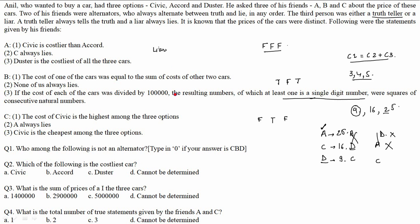Let's check the rest of the cases. In Case 1: A is a liar, B is an alternator (T-F-T), C is an alternator (F-T-F). The pricing is Accord 25 lakhs, Civic 16 lakhs, Duster 9 lakhs. This case is satisfied.